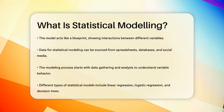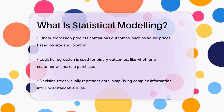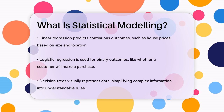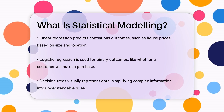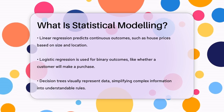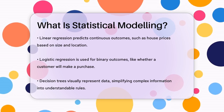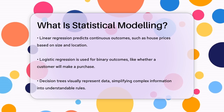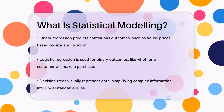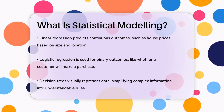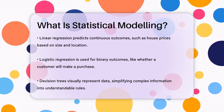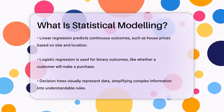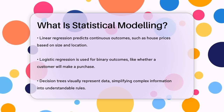There are different types of statistical models like linear regression, logistic regression, and decision trees. Linear regression, for example, helps predict a continuous outcome like the price of a house based on its size and location. Logistic regression is used for binary outcomes such as whether a customer will buy a product or not. Decision trees are visual representations that help in making decisions by breaking down complex data into simpler rules.